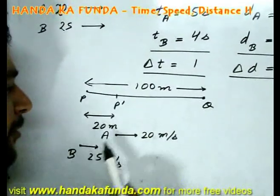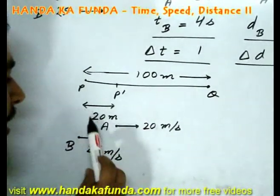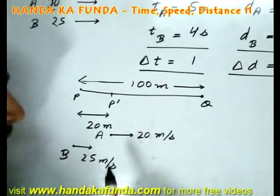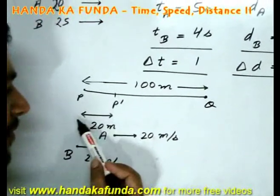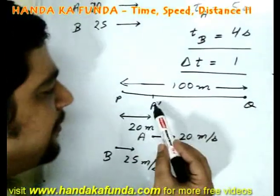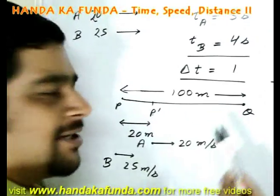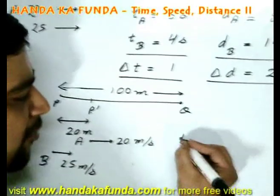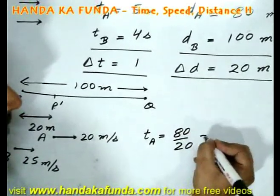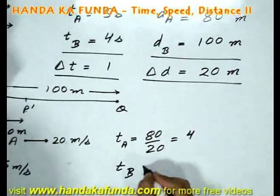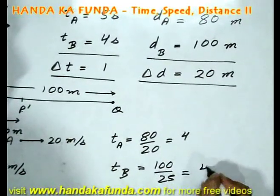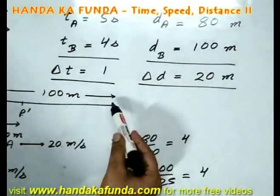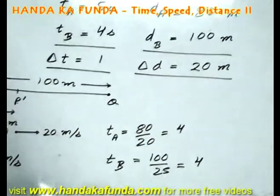Since B is the faster runner, he decides to give A an advantage — a start of 20 meters — meaning A starts from a point 20 meters ahead of B. So A covers only 80 meters while B covers the full 100 meters. A takes 80 divided by 20, which is 4 seconds. B takes 100 divided by 25, which is also 4 seconds. Both take the same time, so the race finishes in a dead heat — both reach the finish line at the same time.